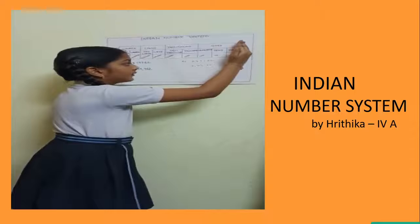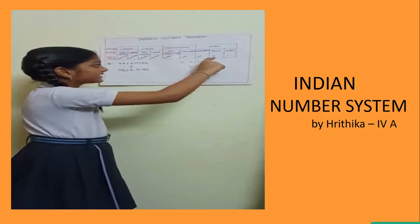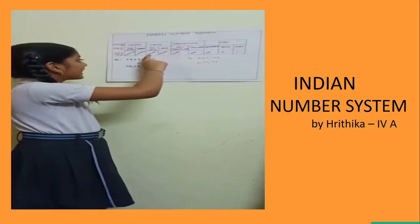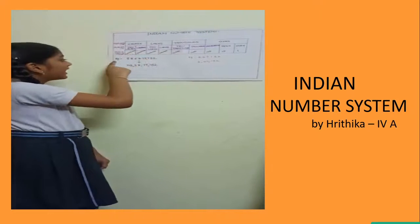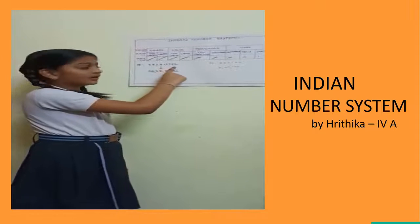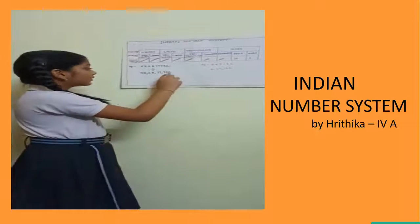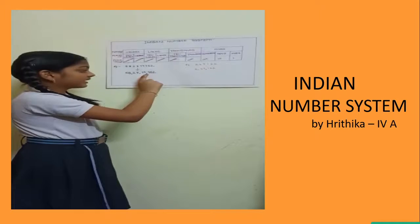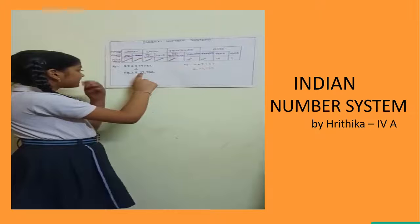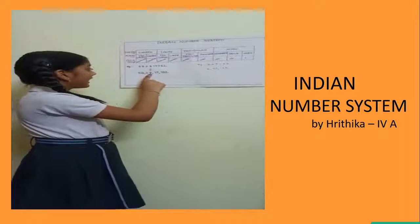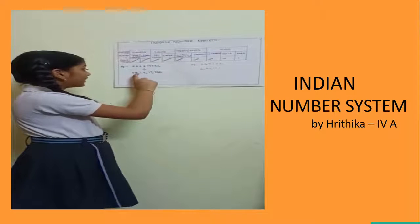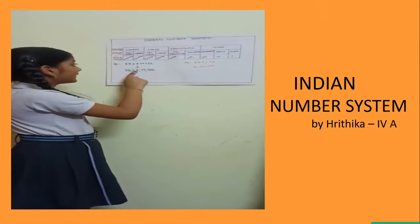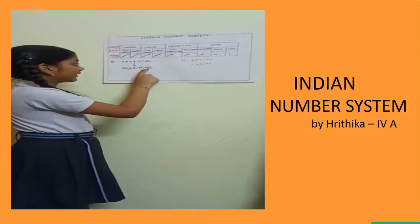Place value, coming from the right: ones place, tens place, hundreds place, thousands place, ten-thousands place, lakhs place, ten lakhs place, crores place, ten crores place. I'll take an example. This is a 9-digit number. It is difficult to read, so I have grouped this number by inserting commas — after hundreds place, after ten-thousands place, after ten lakhs place. Now it is easy to read this number: fifty-eight crores, twenty-eight lakhs, seventy-nine thousand, seven hundred and fifty-two.